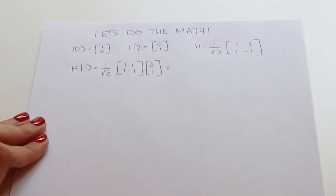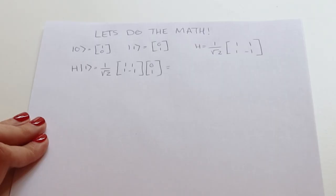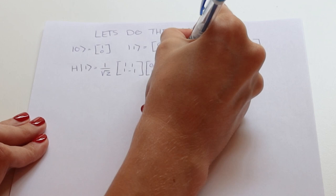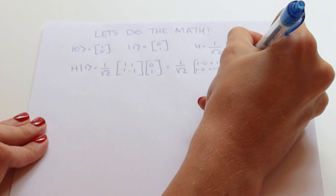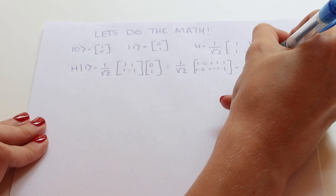Now remember your matrix multiplication here. So one over the square root of two in the front, and the second part here, one times zero plus negative one times one. So here we go. And that equals one and negative one here. So this is the state we have after Alice applies her Hadamard gate.